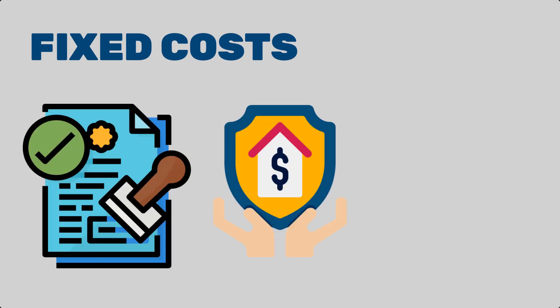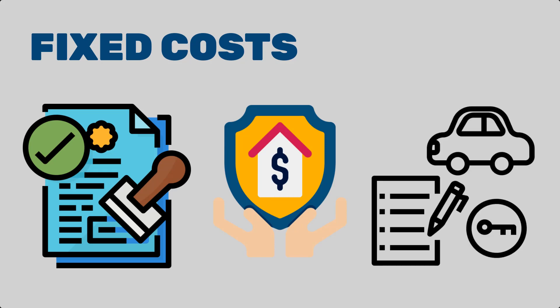Now let's talk about fixed costs. These costs remain constant regardless of the project's scale or duration. Fixed costs include items like software licenses, insurance premiums, and equipment leases. They are predetermined and do not fluctuate based on the project's progress. When planning a project, it's crucial to identify and allocate fixed costs accurately.